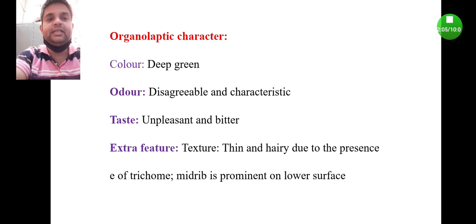Coming to extra features: thin and hairy due to the presence of trichomes, and the midrib is prominent at the lower surface. So these are certain morphological features generally found in datura leaf.